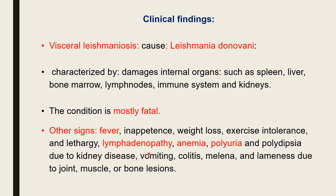Lethargy is present. Lymphadenopathy is a common symptom — enlargement of the lymph nodes. Anemia is also a common symptom because of hemolysis. Polyuria is a common symptom because of involvement of the kidney with glomerulonephritis. Polydipsia is observed due to kidney disease. There is vomiting, colitis, melena — black feces because of hemorrhage — and lameness due to involvement of the joints and muscles.